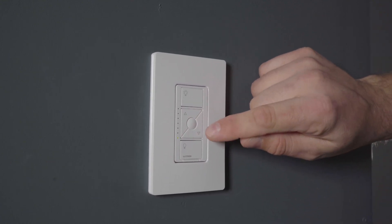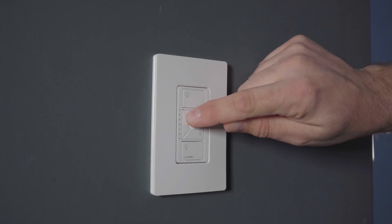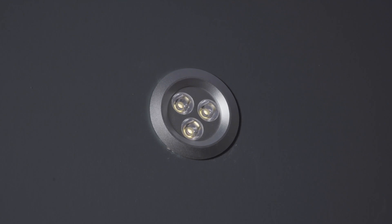Now use the brighter and the darker button to adjust the low level trim. We're going to adjust it up to a level where it's not blinking.